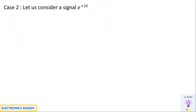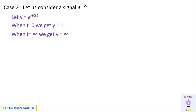Now let us look at Case 2. Consider the exponentially increasing signal y = e^(+2t). At t=0, y = e^0 = 1, which is finite. At t=∞, e^(+∞) is not defined — its value goes to infinity. Since at t=∞ the amplitude is not finite, the output is unbounded, and therefore the system is unstable.